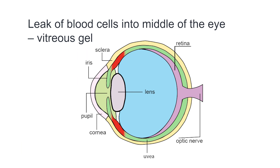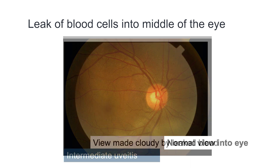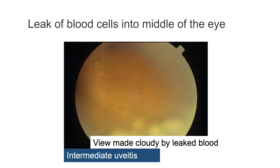Uveitis can also happen in the middle of the eye — we call this intermediate uveitis. This is the normal view into the eye. Intermediate uveitis makes the view into the eye and the view out of the eye cloudy.